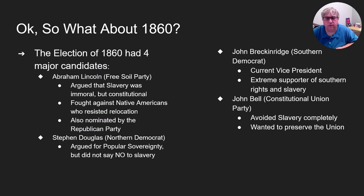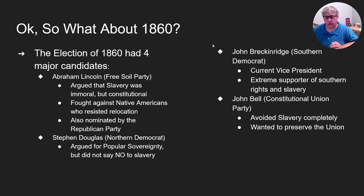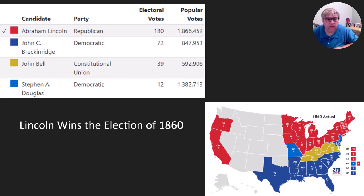When Southern Democrats move out, they hold their own meeting and choose John Breckinridge — James Buchanan's vice president from Tennessee and an extreme supporter of slavery. Last but not least is John Bell of the Constitutional Union Party — basically, let's not talk about slavery, keep the union together, and kick the can down the road. The vote results: Breckinridge gets 850,000 votes, John Bell gets about 600,000, Abraham Lincoln gets 1.9 million, and Stephen Douglas gets 1.4 million.